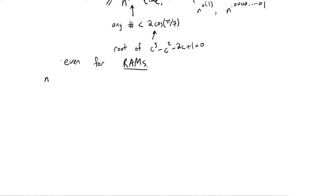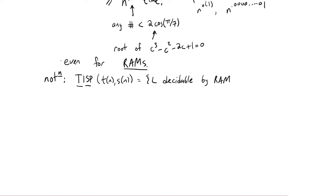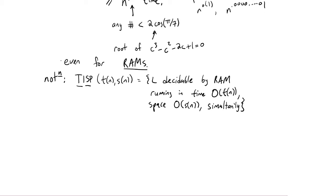Let me first introduce notation that will help us during this lecture. We're going to talk a lot about algorithms that simultaneously run in small time and small space. We'll introduce the notation TISP — time and space — TISP(T(n), S(n)): all languages decidable by a RAM Turing machine running in time O(T(n)) and space O(S(n)) simultaneously. This notation will help us talk about algorithms that are simultaneously low in space and low in time.